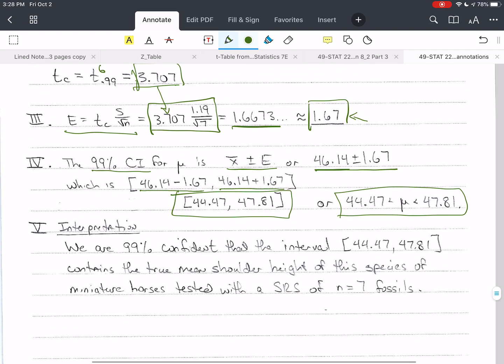Now we need the most important part, the interpretation. We are 99% confident that the interval from 44.47 to 47.81 contains the true mean shoulder heights of this species of miniature horses. This was tested with a simple random sample of n equals 7 fossils.